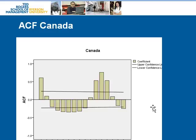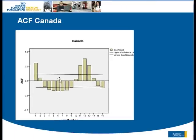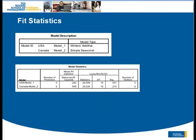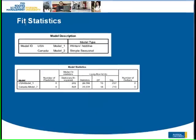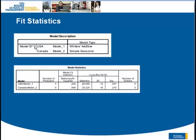I won't go into detail about what the ACF means here, but these numbers confirm that the autocorrelation structures are different for the US and Canada. In SPSS I selected the option to run the model using SPSS 17. The software is smart enough to fit different model types — for the US it selected a Winters additive model, and for Canada a simple seasonal smoothing model.